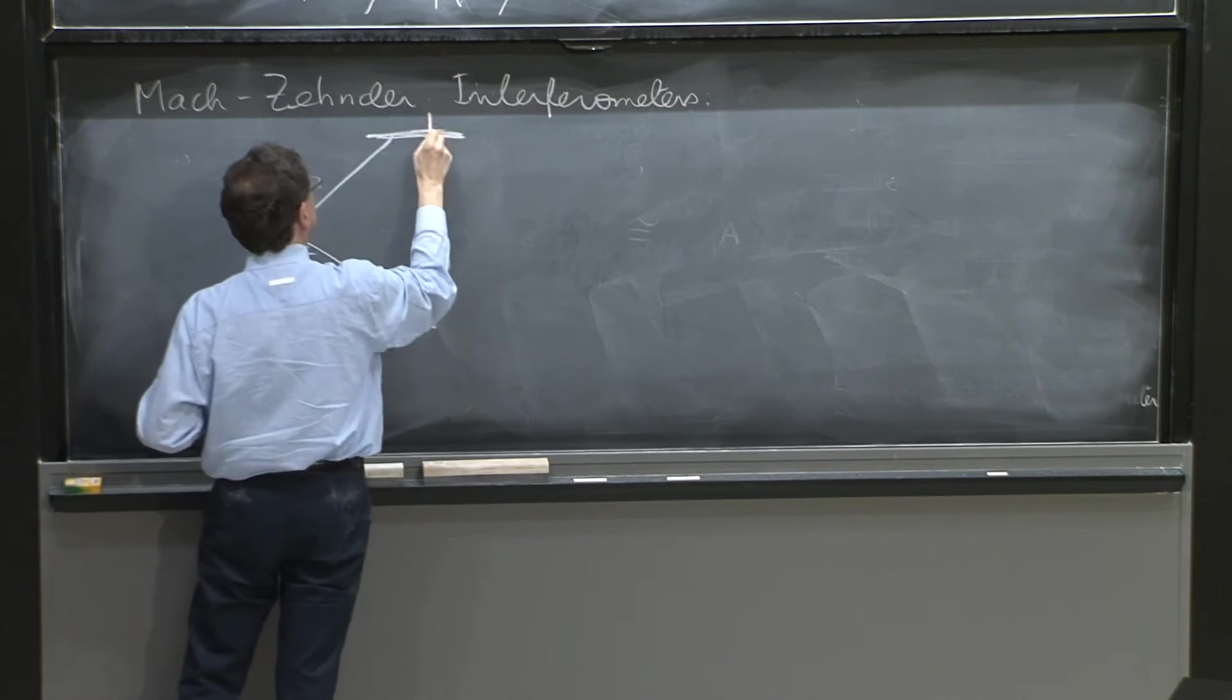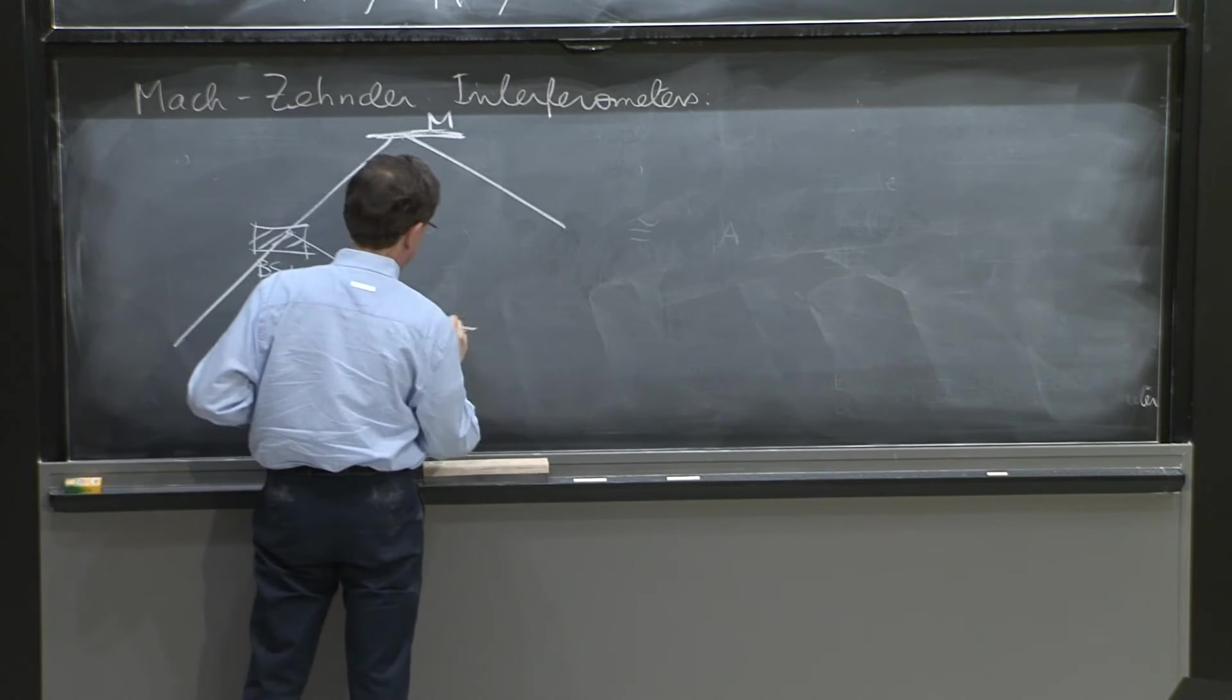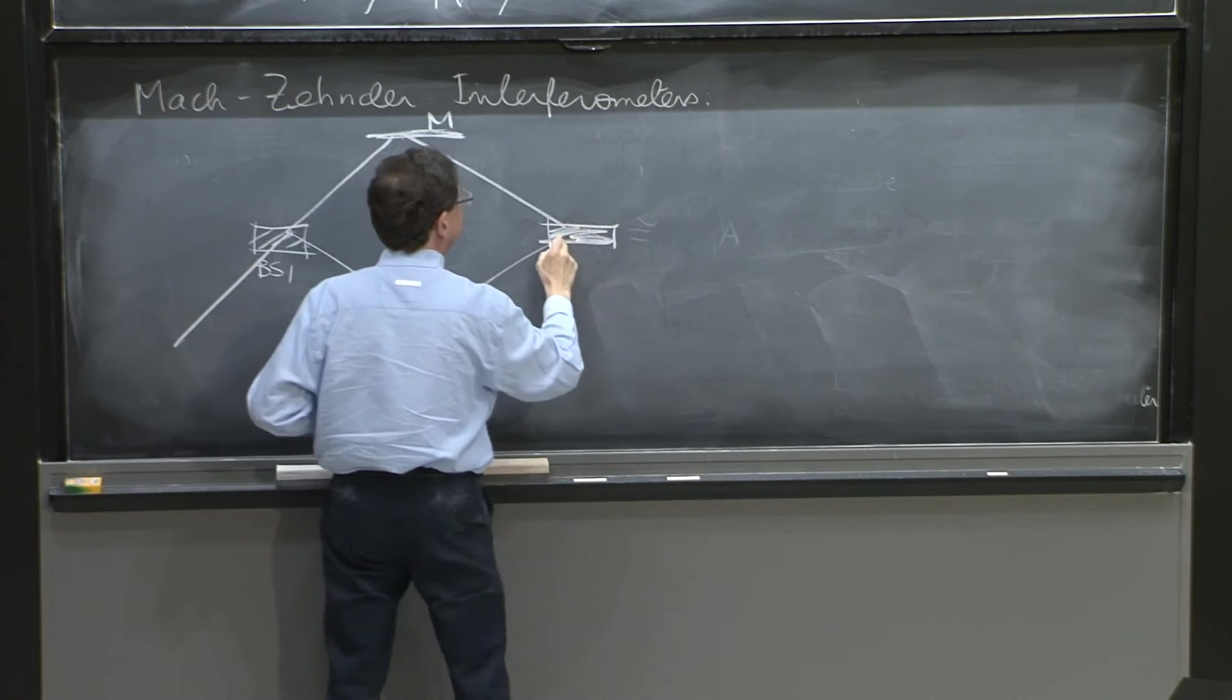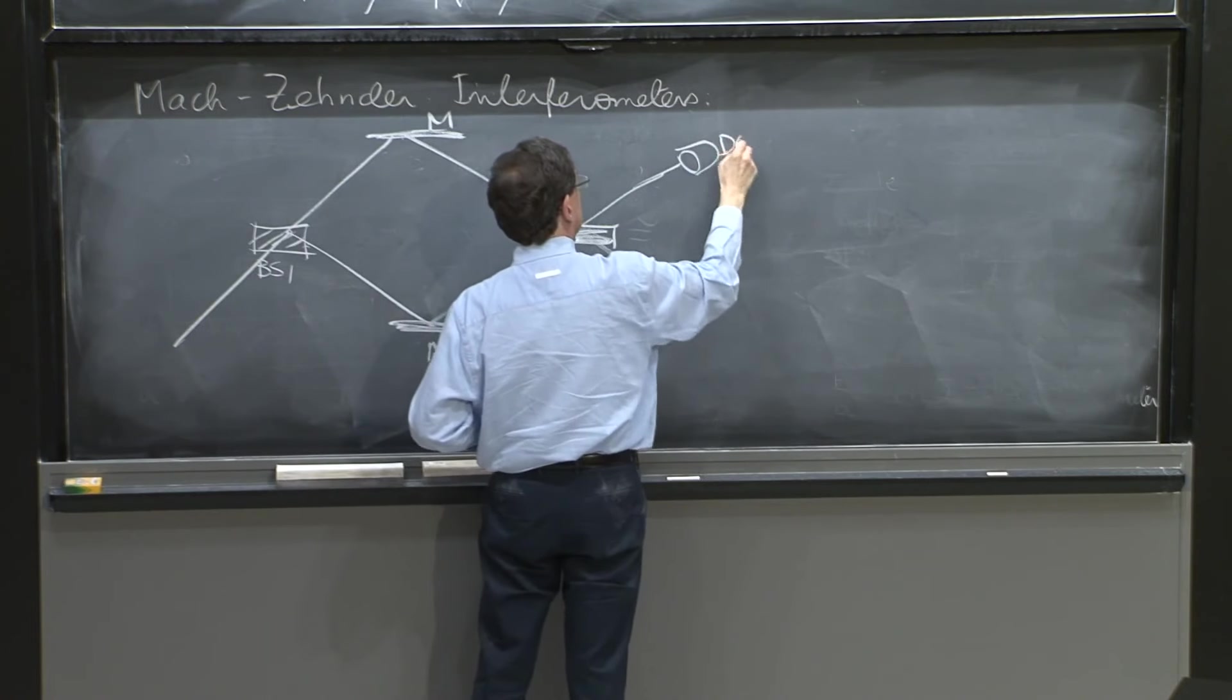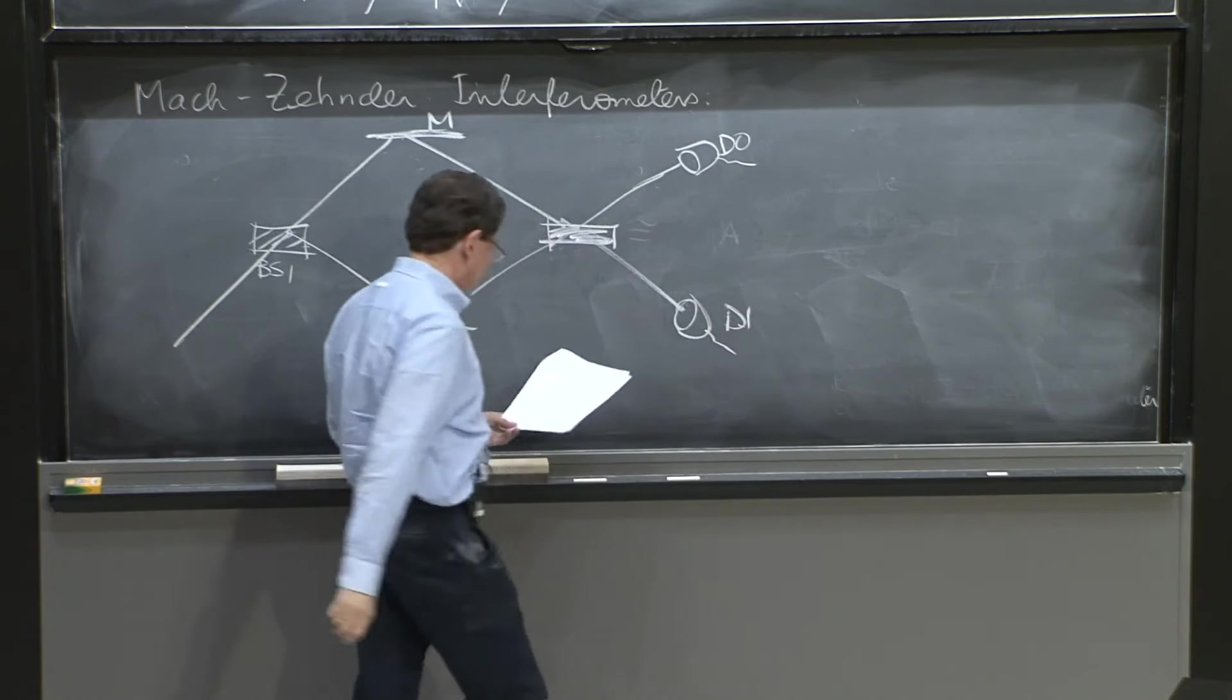A mirror, another mirror. The beams are recombined into another beam splitter, and then two beams come out, one into a detector D0 and a detector D1.